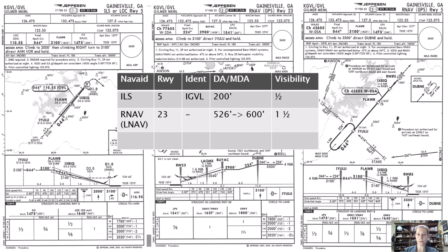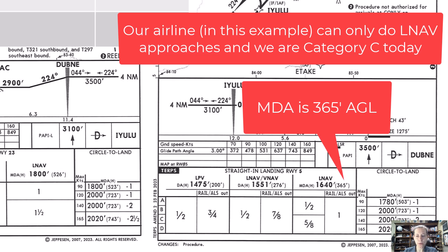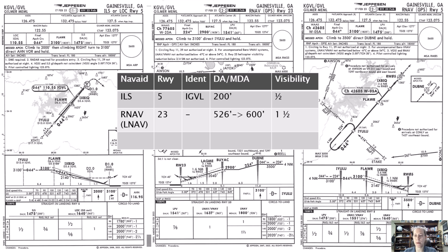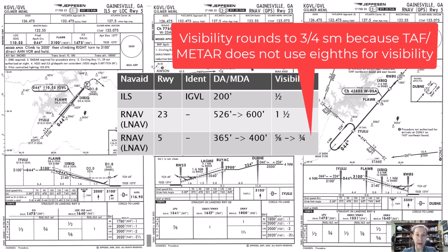Runway five also has an LNAV approach. With LNAV-only approval, the MDA is 365 feet and visibility is five-eighths. I round the 365 up to 400 and the visibility from five-eighths up to three-quarters. I do that because METARs and TAFs don't report or predict visibility in eighth increments — only quarter miles. So to make it useful, I round up to the nearest quarter mile.